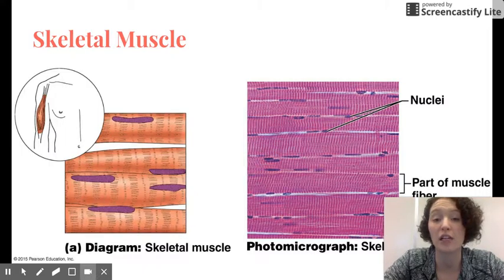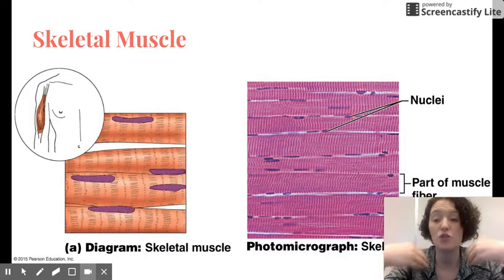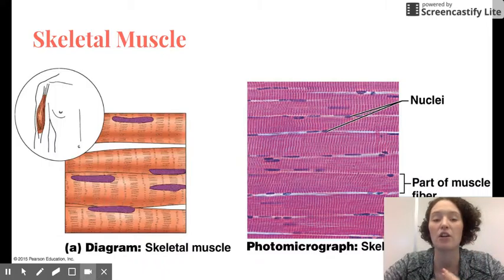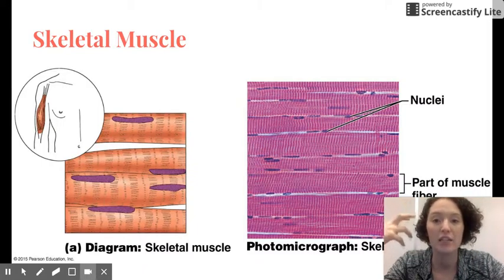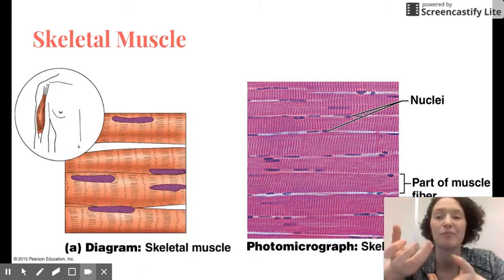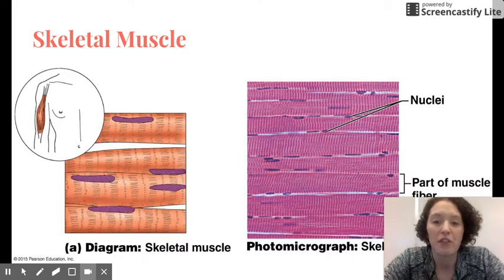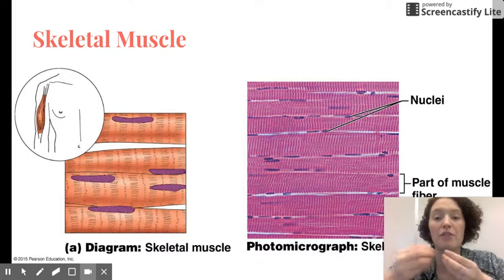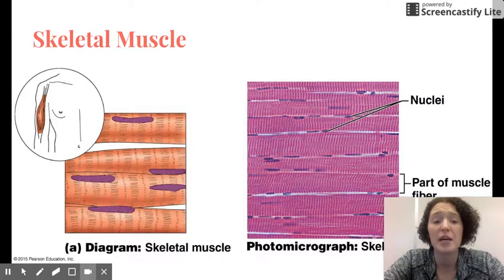These can be controlled voluntarily, which means that I choose to move my hands, my legs, to create facial expressions. My brain controls those, and I can think to move them, and then they move. This sort of muscle forms the flesh of our body. It is what forms our muscular system.